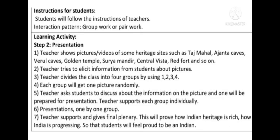Second, the teacher tries to elicit information from students about the pictures. Third, the teacher divides the class into four groups using the one-two-three-four method. Each group will get one picture randomly. Then the teacher asks students to discuss the information about the picture, and one student will be prepared for presentation. The teacher supports each group individually.